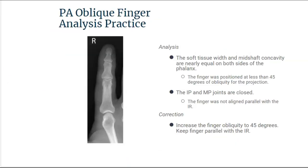In this practice analysis for the PA oblique finger, the image looks kind of like a PA because the soft tissue on both sides of the phalanx appears nearly equal. This tells you the finger is insufficiently rotated. To correct this, we need to increase the degree of finger oblique to 45 degrees. Also, the interphalangeal and metacarpophalangeal joints are closed — we need to make sure the finger is aligned parallel with the IR to get those joints open.